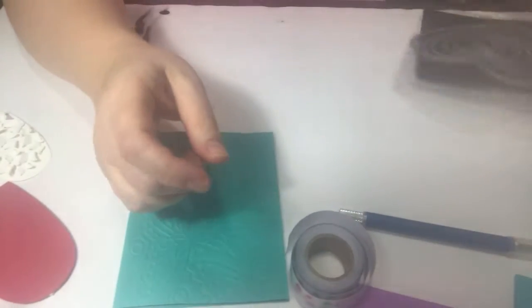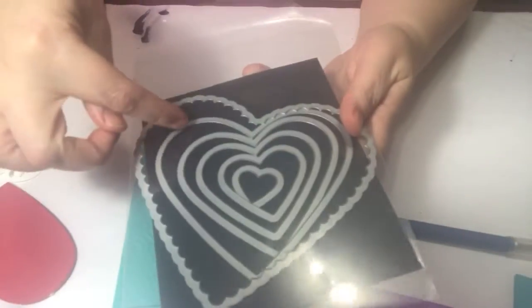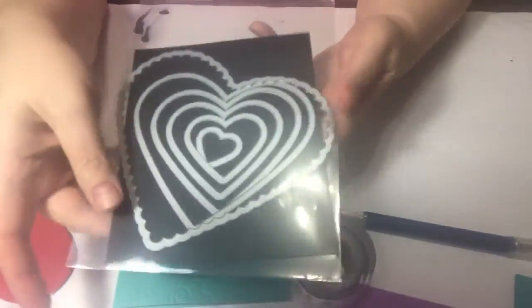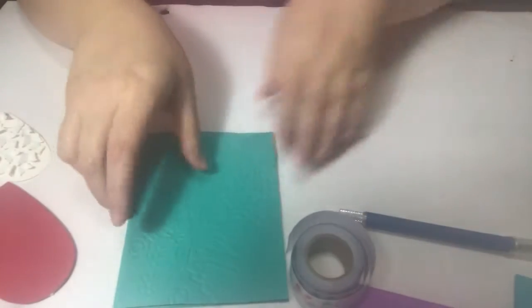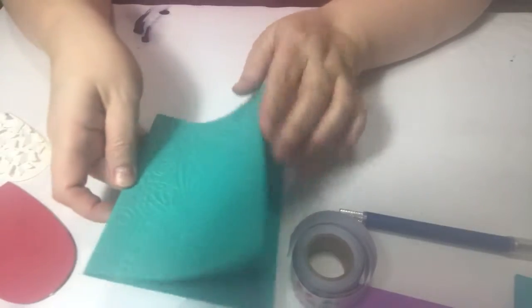And then I just used this die set to do the heart around it and a layering heart. So we already embossed it.